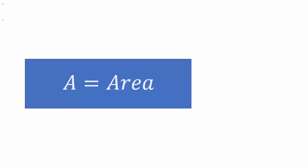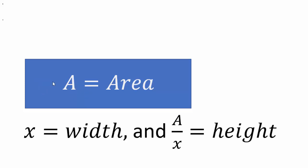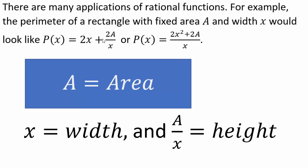There are many applications for rational functions. For example, consider a rectangle with a fixed area a. When you have a fixed area, you can make the width and height any number you want as long as their product is the area, because length times width is area. If the area is fixed, then the height is always given by area divided by the width. So the perimeter becomes a function of one variable: 2 times the width plus 2 times the height, which is 2x plus 2 times a over x. Making common denominators gives 2x squared plus 2a over x — a rational function.